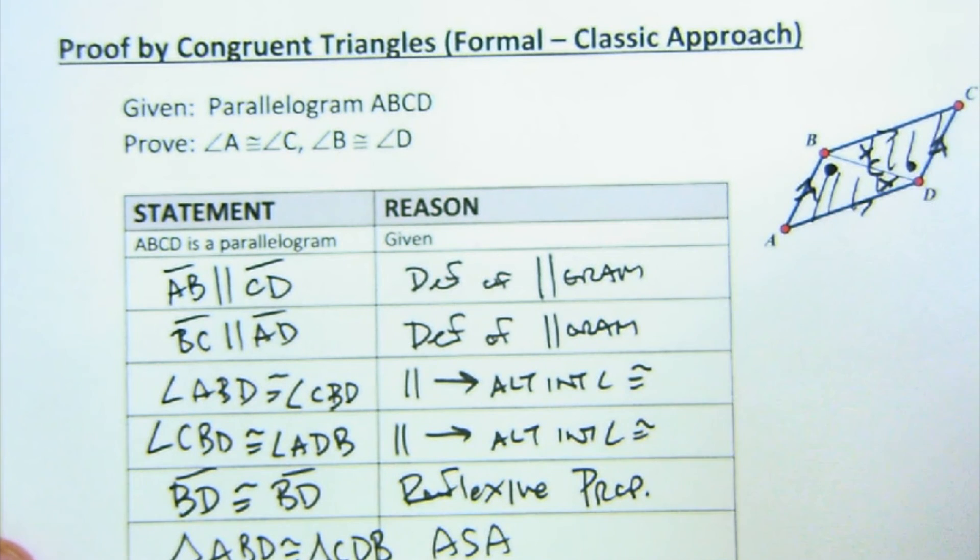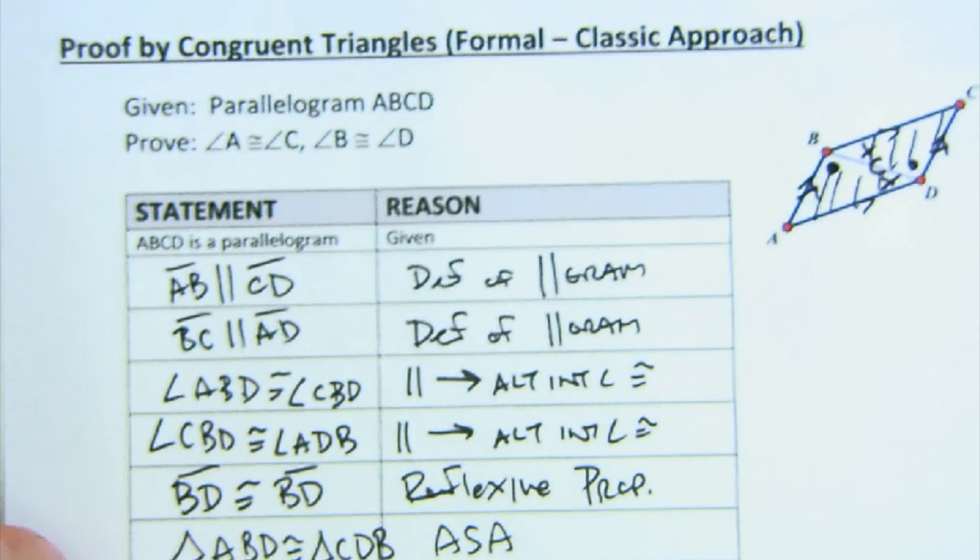Ah, because of that, I know A has to be the same as C, and B has to be the same as D. Corresponding parts of congruent triangles are congruent. Just like that.